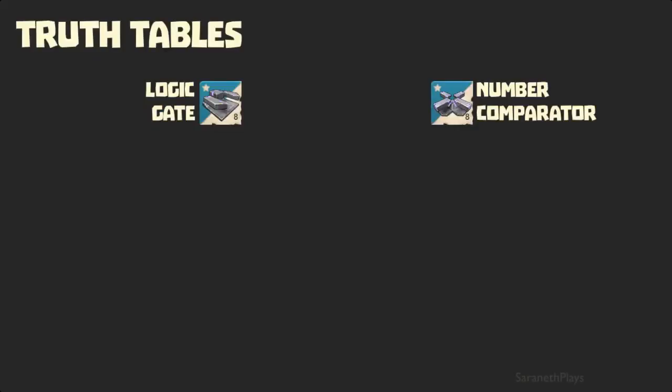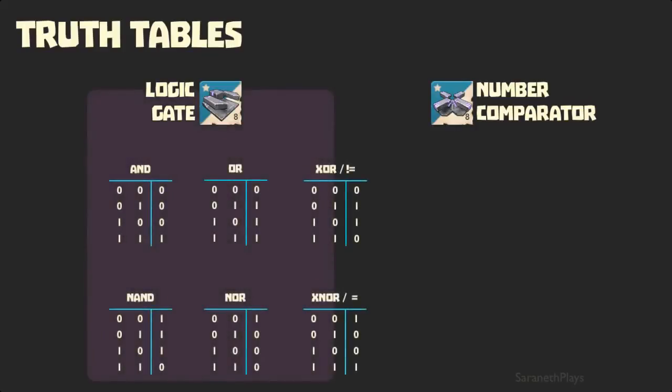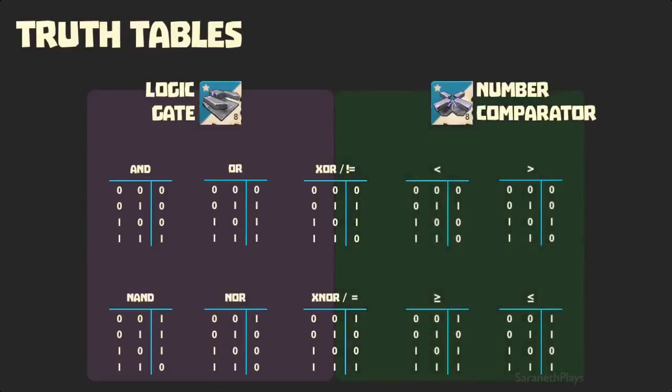Now that we've exhausted testing the individual operations, we have a full complement of truth tables for our reference. The logic gate has 6 operations with 6 different results. The number comparator also has 6 operations, but only 4 are different from those of the logic gate.